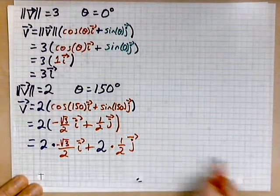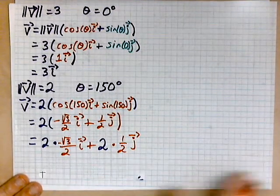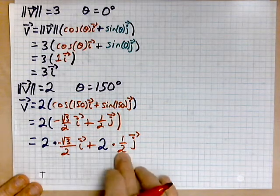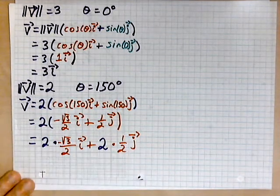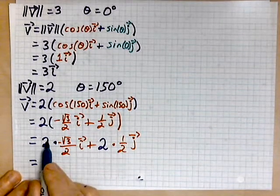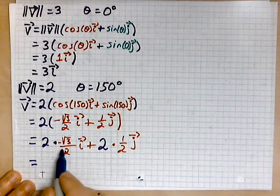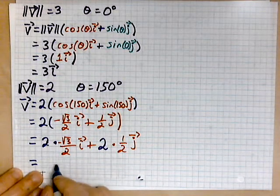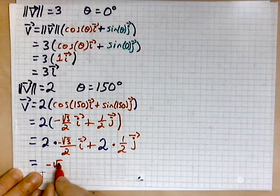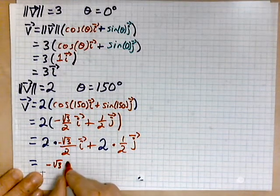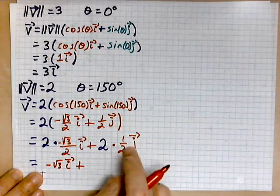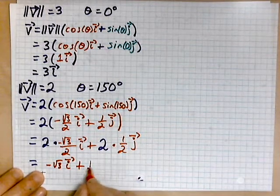I want to make all the steps super explicit and clear. We've just distributed that 2 over to this component and that component. At this step, you may cancel. So, this 2 and those 2 and that 2 cancel away. All that remains is the negative root of 3. So, we'll have now negative root of 3, and that is your i. And then this 2 and that 2 cancel, and all that remains is 1j.